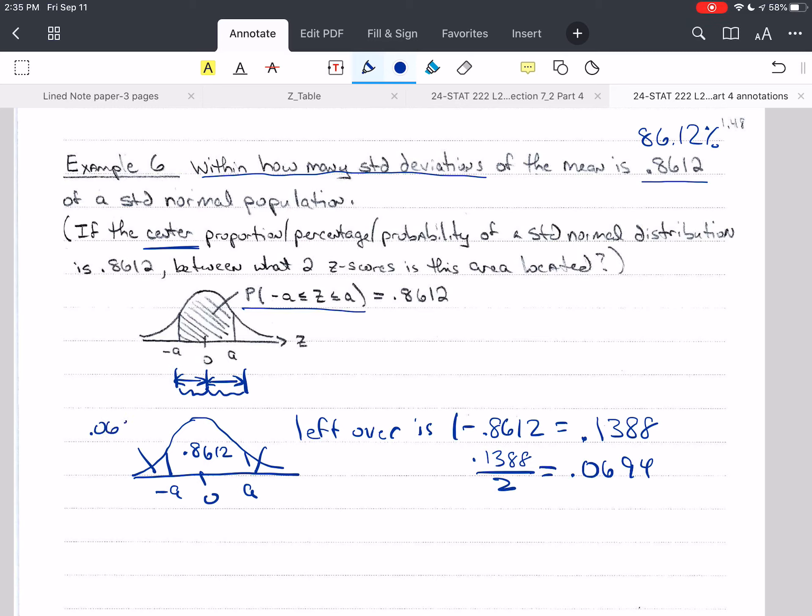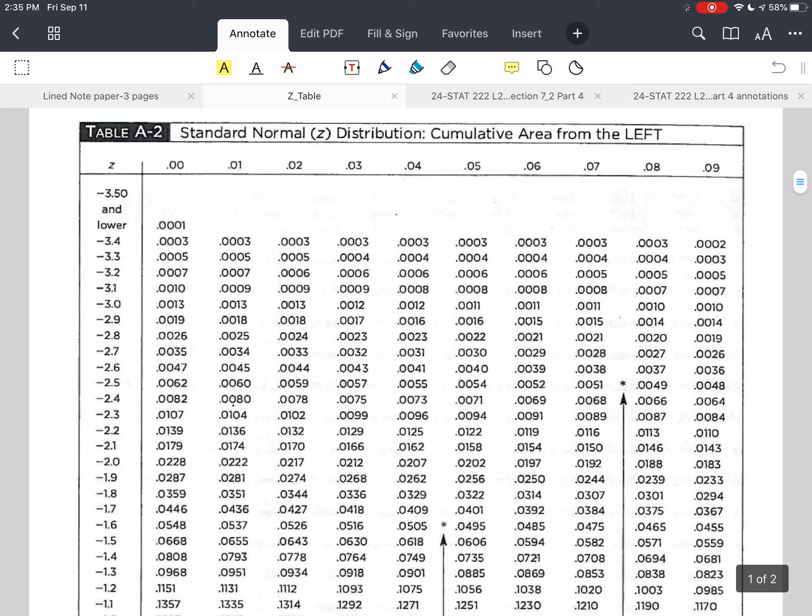So the answer is 0.0694. 0.0694 here, 0.0694 here. These three probabilities have to add up to 1 or you've made a mistake. Now once I know 0.0694, that's the area to the left of negative a, and that is in our z-table.